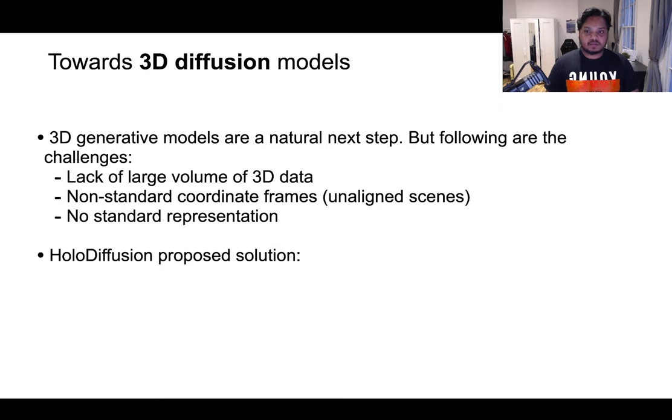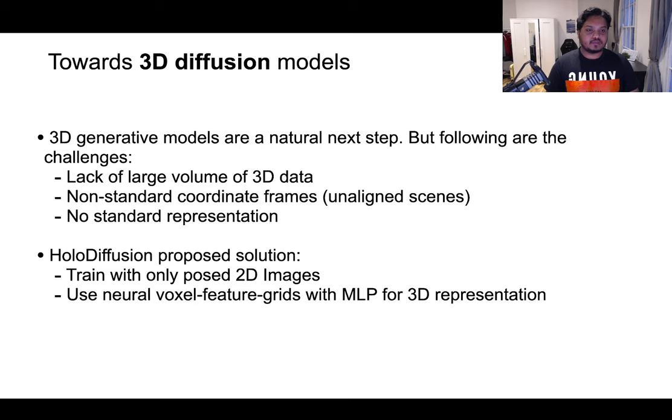In this work, we sidestep the issue of ground-truth 3D data by utilizing only posed 2D images of the 3D scenes as the training supervision. And in order to tackle the problem of 3D representation, we propose to use a hybrid explicit-implicit grid of features decoded by an MLP for 3D radiance fields as the representation.